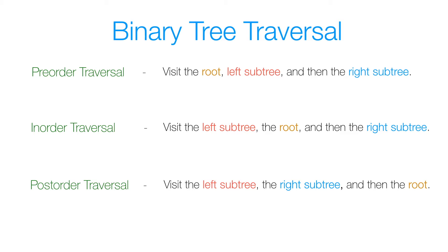To remember left then right, just think of the word order and the natural flow of things. Things naturally tend to flow from left to right — think of writing on a piece of paper, you're most likely going to write from left to right, or think of a progress bar on your computer, it grows from left to right. So that's a really easy way to remember it.